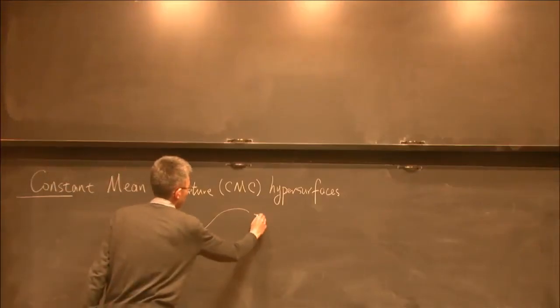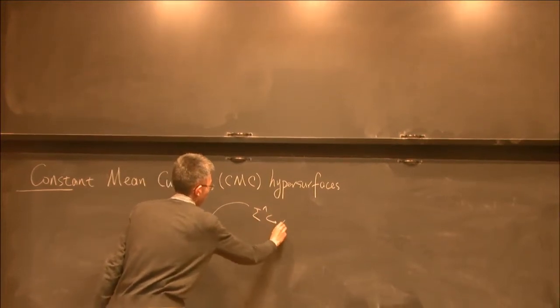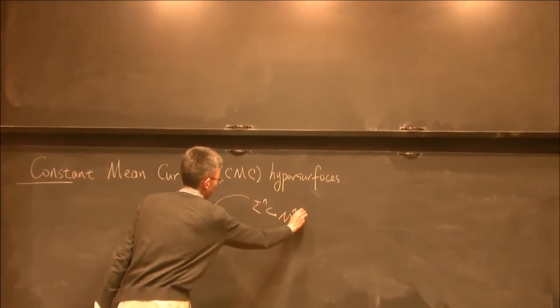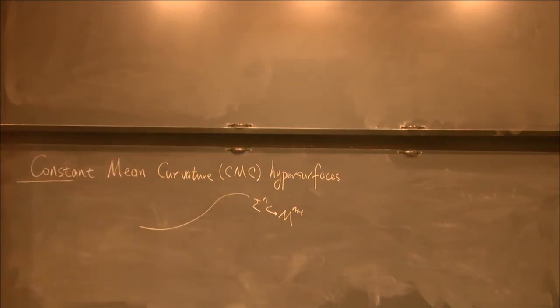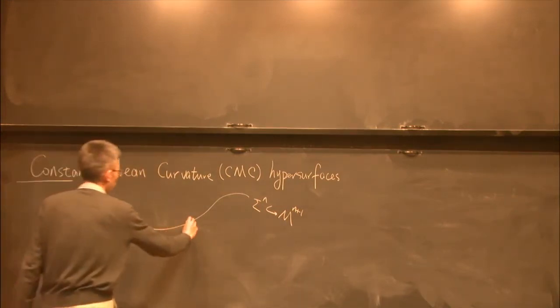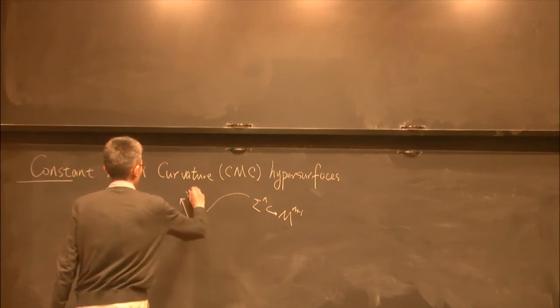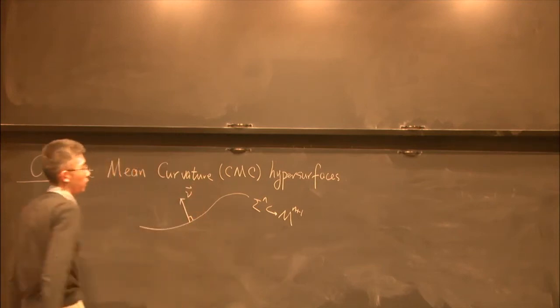Let me quickly introduce the basic object of study. We always think of a hypersurface inside an ambient manifold. The ambient dimension I denote by n plus 1 and the hypersurface dimension is n. I assume we have a unit normal vector field along it.